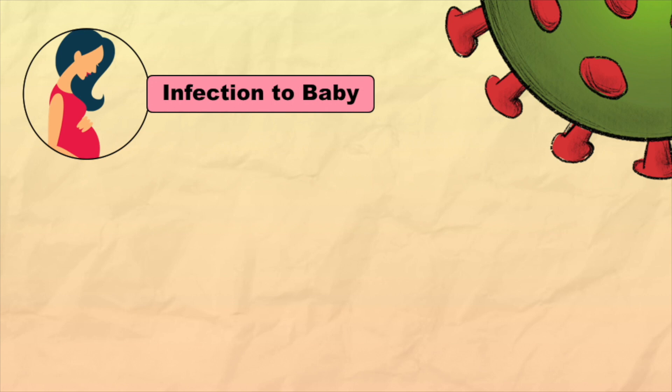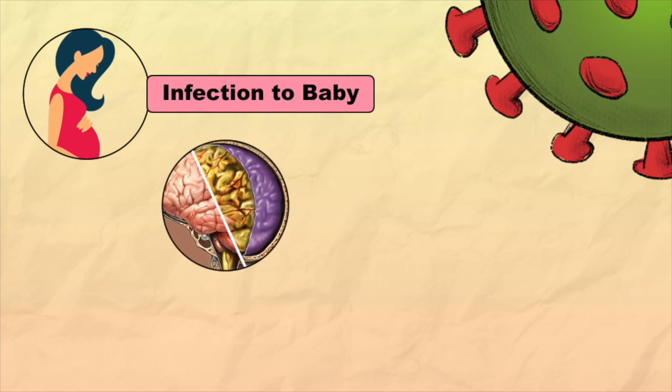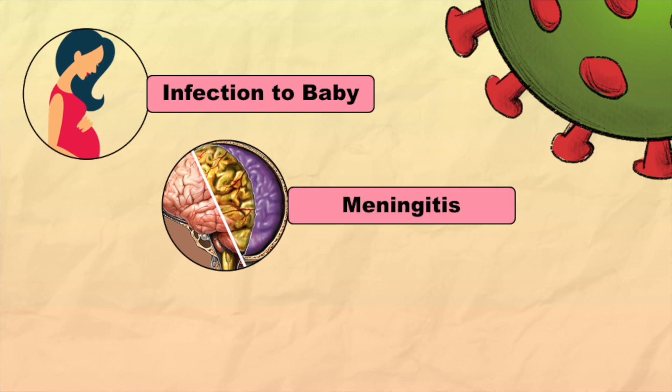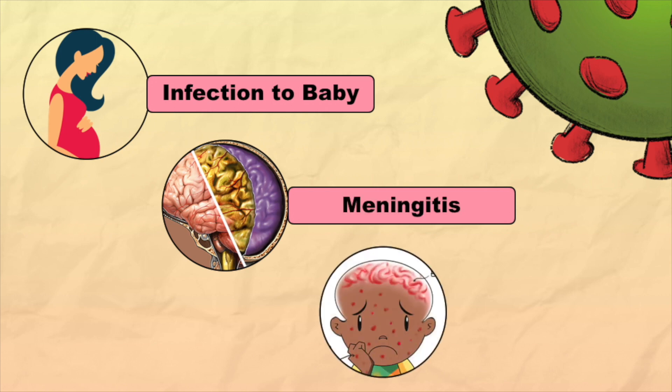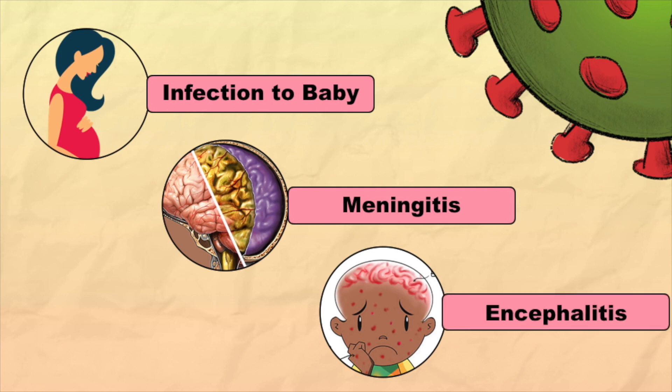In rare cases, infection with HSV-1 or HSV-2 can lead to meningitis, i.e. inflammation of the covering of the brain and spinal cord, or encephalitis, i.e. inflammation of the brain.